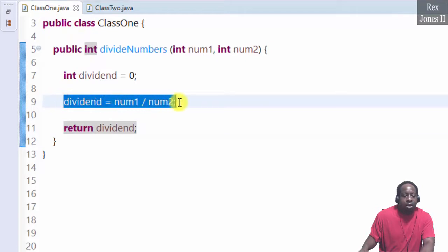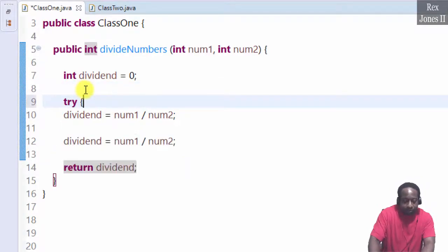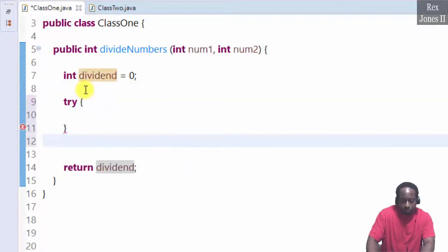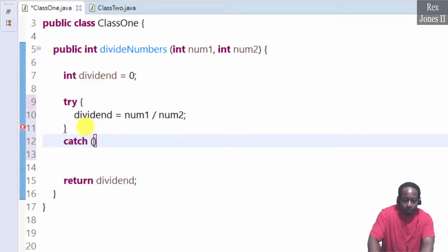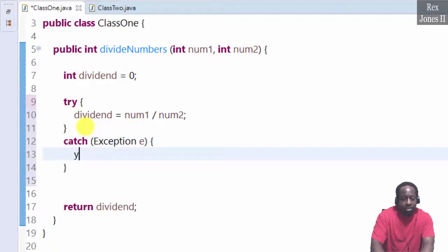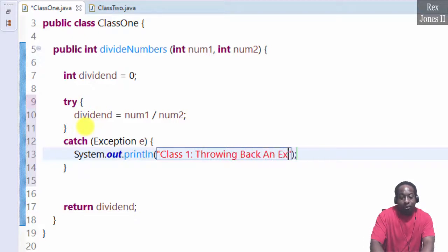By surrounding dividend equals num1 divided by num2 with the try statement. In the catch statement, exception e, we write a print statement System.out for Class 1: Class 1 throwing back an exception to Class 2.